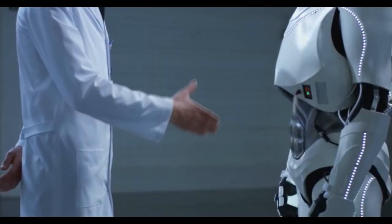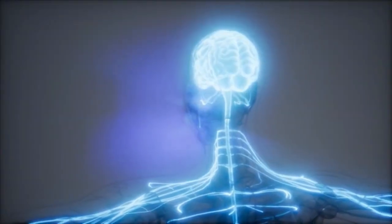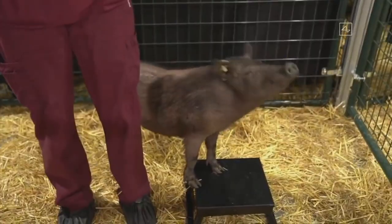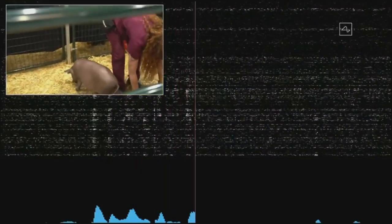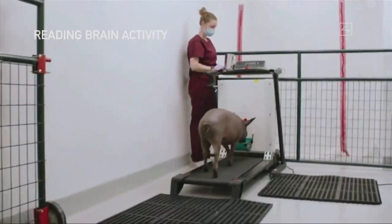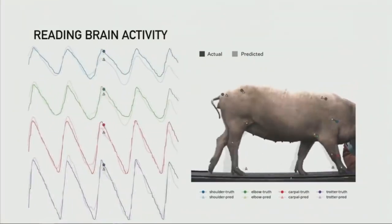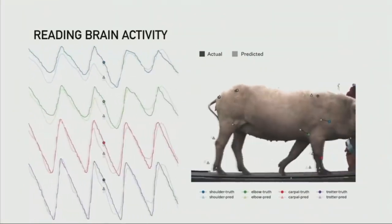The Neuralink device is designed for humans and can connect to artificial intelligence. Neural signals are read from the brain. In this presentation, a pig on a treadmill was able to create a signal that was emitted from the brain, and the device is able to do render readings of those neural signals.